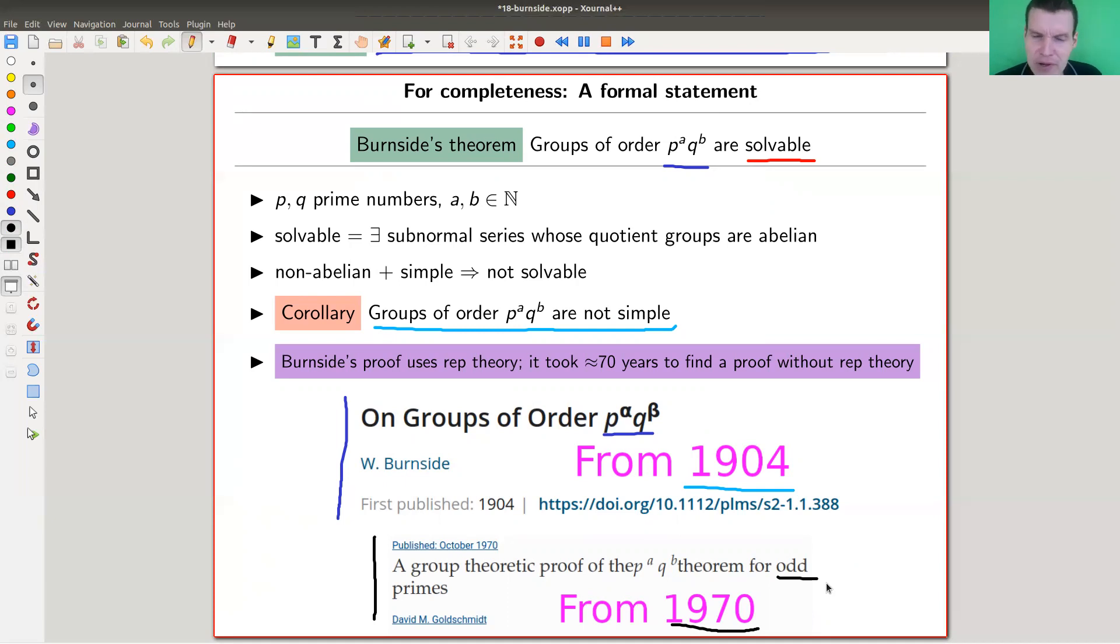The purely group theoretical proof is much harder. It's unsatisfactory for a group theorist if you need a different theory to prove a theorem within your own theory, especially if that theory is much more sophisticated. With representation theory, you can cook up a reasonably easy proof. I'll sketch it—not Burnside's original, but the one from Steinberg's book, Representation Theory of Finite Groups. The proof using group theory is also not very hard, but much smarter, less straightforward. That's probably why it took 70 years to find a non-representation theoretical proof.